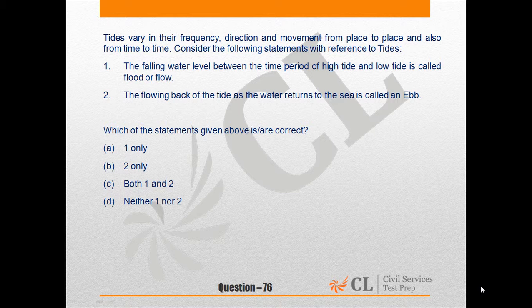Statement 1: The falling water level between the time period of high tide and low tide is called flood or flow. Statement 2: The flowing back of the tide as the water returns to the sea is called an ebb. We have to find out the correct statement out of these two.